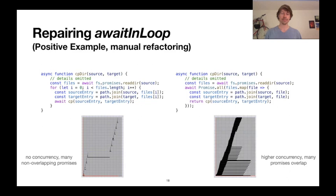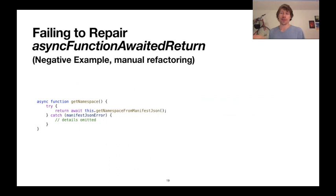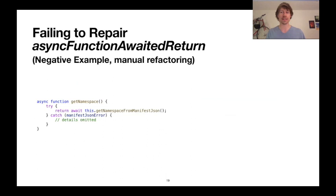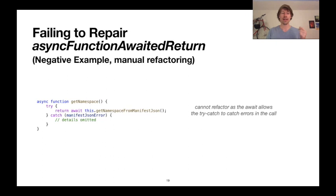I'll end with an example of our inability to repair an instance of the anti-pattern. This is a function called getNamespace that in a try-catch calls another function, getNamespaceFromJson, and awaits that. This is an example of having an await in an async function, which is not great. However, we cannot refactor this because the await forces the promise to resolve so the try-catch can handle the error. If we removed the await, the caller would have to deal with the error, and we didn't feel comfortable making that refactoring, although it technically could be possible.